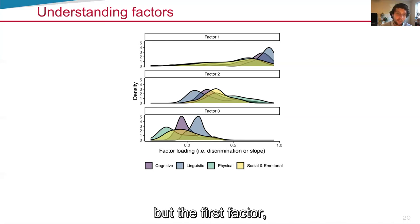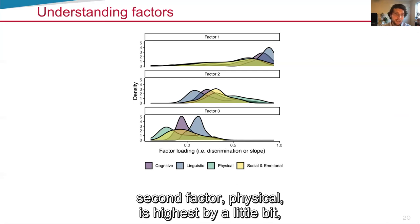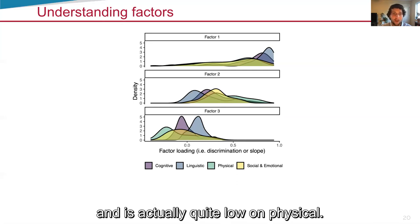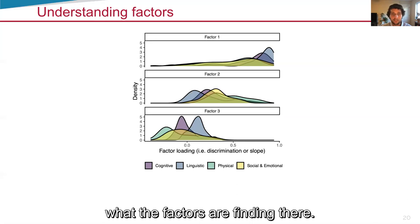But the first factor, the milestones that load most highly are linguistic. Second factor, physical is highest by a little bit. And then the third factor is back to being linguistics and is actually quite low on physical. So it's interesting to try to get a little bit of a sense of what the factors are finding there.